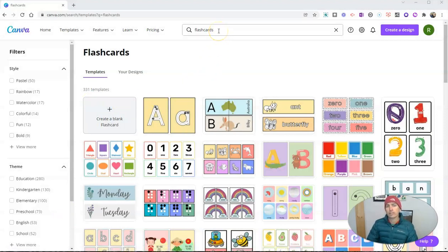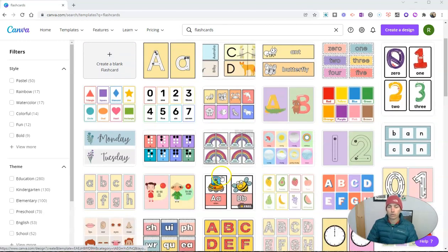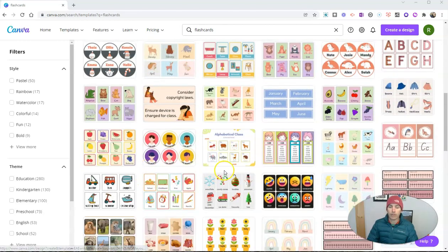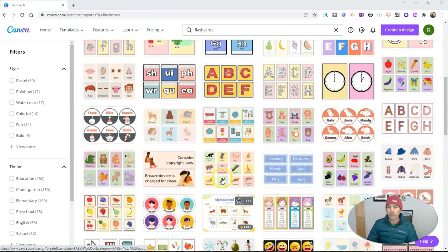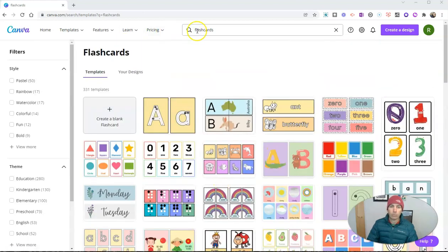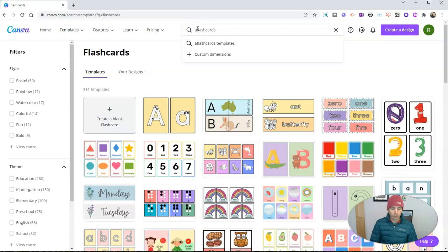You can see I just did a search for flashcards in the templates and I have 331 results. Now I could just scroll through until I find a template that I like and make a copy of it, but I want to do addition flashcards.